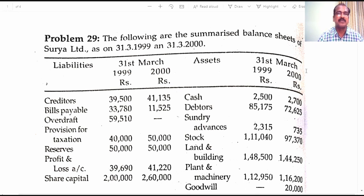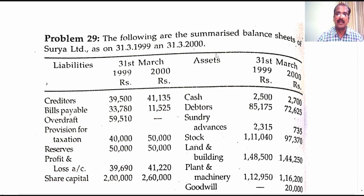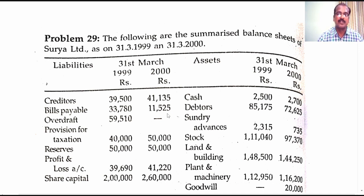The following are the summarized balance sheets of Surya Limited as on 31-3-1999 and as on 31-3-2000. Let us look at the items given in the liability side of the balance sheets. Creditors — you find an increase in creditors, which is a current liability and would be taken over to the schedule of changes in working capital. Increase in current liability leads to decrease in working capital. Bills payable is also a current liability; you find decrease in bills payable, that will lead to increase in working capital.